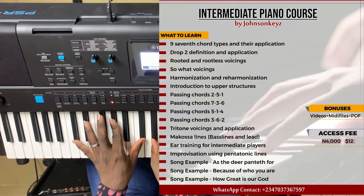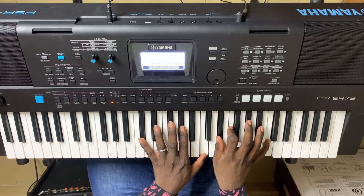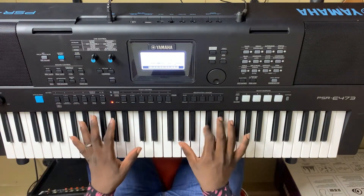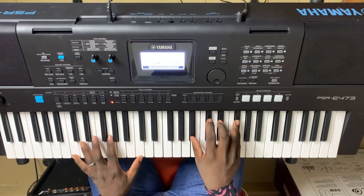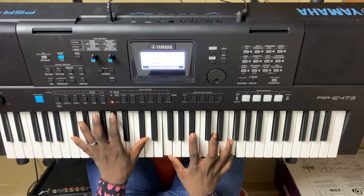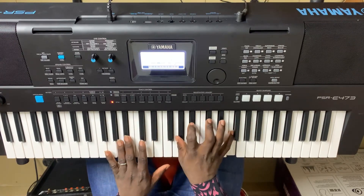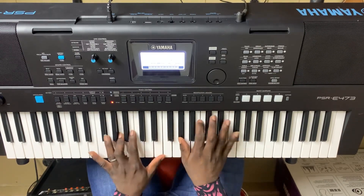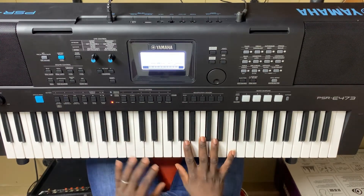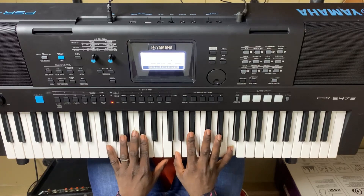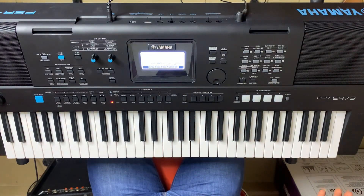Now to the cut. The cut covers a 7-3-6 progression — we have a 2-5-1-4. This time we are covering it with diminished voices in drop 2s. Let me show you the cuts.